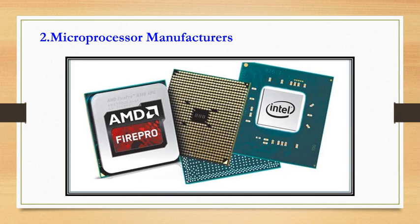Microprocessor manufacturers: among all of these, AMD is very popular. Intel is very popular for their quality. IBM is there, Texas Instruments, and Motorola. Intel Corporation is credited with the invention of the microprocessor and is the foremost in the world in developing and manufacturing microprocessors today.